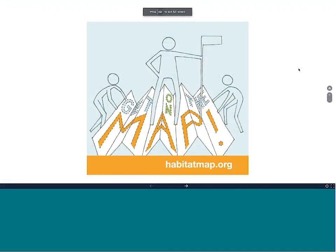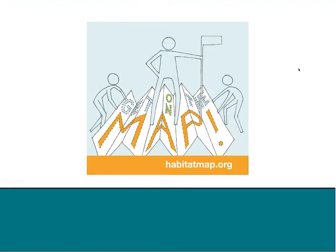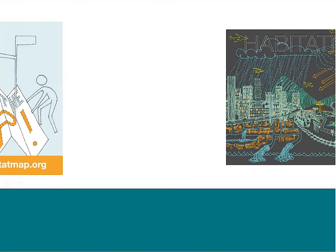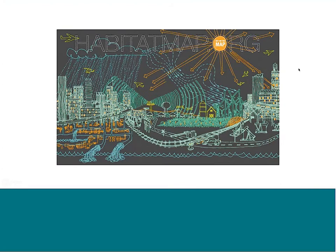My name is Michael Heimbeinder, and I'm the founder and executive director of Habitat Map. Habitat Map is a Brooklyn-based environmental health justice organization, and the primary thing we do is we work with schools and community-based organizations to create planning and advocacy maps.